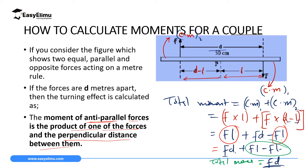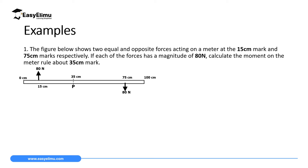For the first example: the figure shows two equal and opposite forces acting on a meter rule at the 15 centimeter mark and the 75 centimeter mark respectively. Each force has a magnitude of 80 newtons. Calculate the moment of the rule about the 35 centimeter mark, which is our pivot.